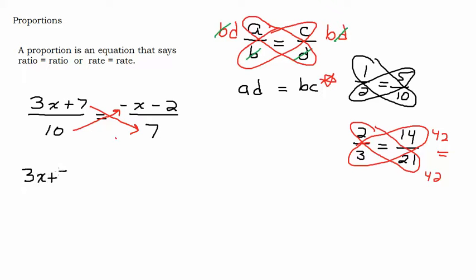If I had said, well, three x plus seven times seven equals, okay, that's not true because here I'm only multiplying the seven by the seven. I need to take this entire numerator times seven. And I need to take ten times that entire numerator.